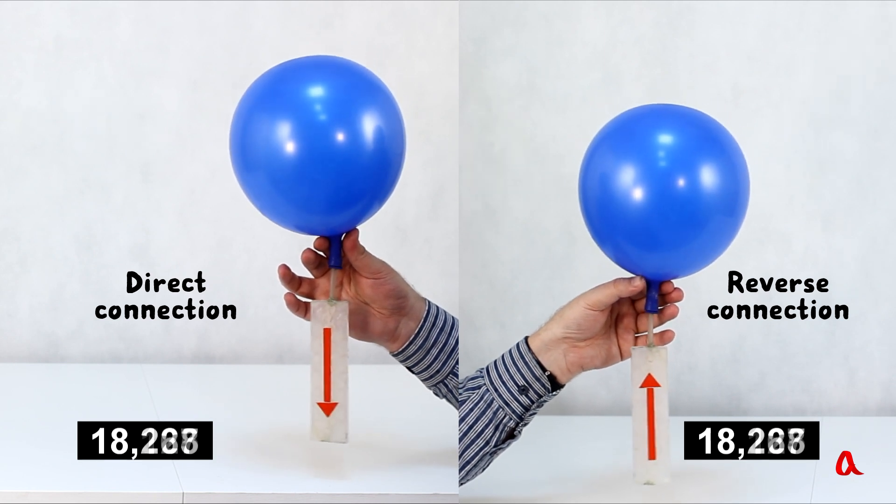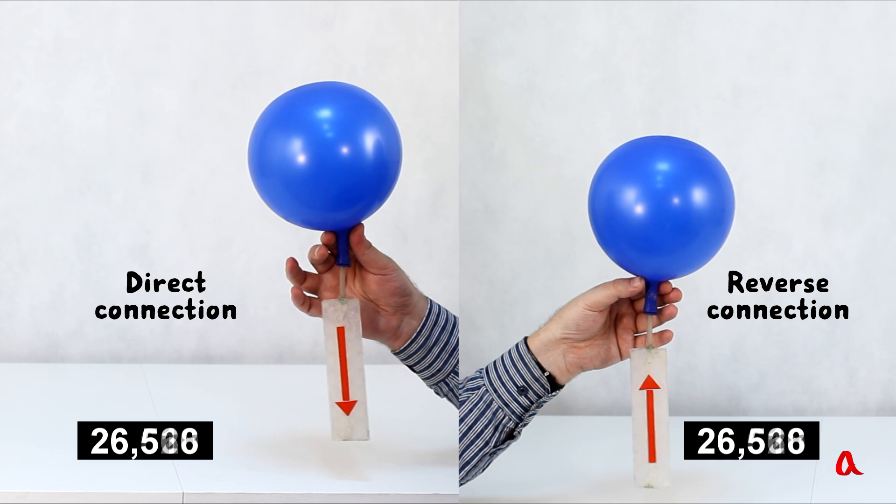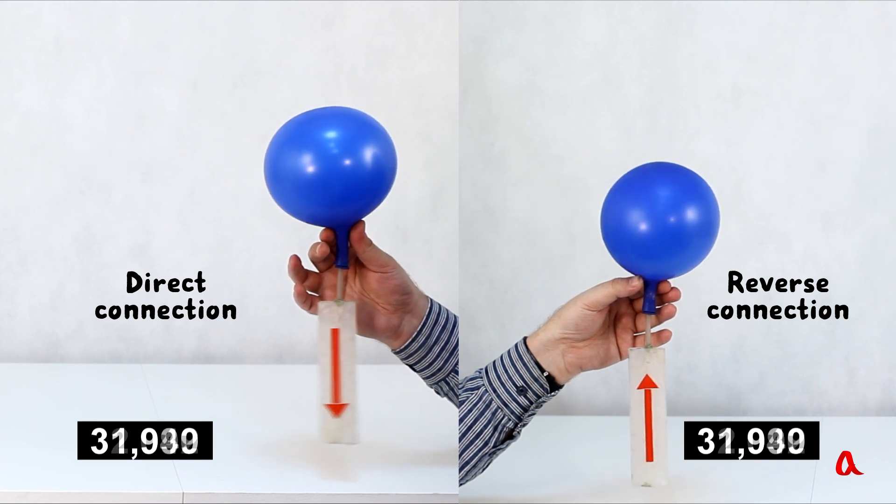With the reverse flow valve the balloon deflates in 37 seconds, which is 3 seconds quicker.